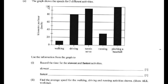So for answer 6a1, you need to write down the units: ten kilometres an hour for the slowest activity and one hundred kilometres an hour for the fastest activity. That's 6a1 organised.